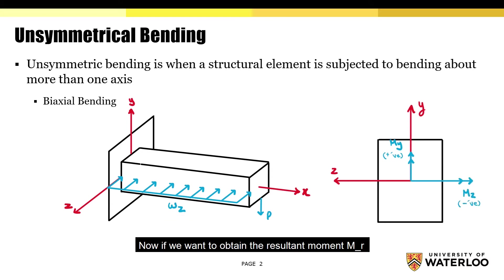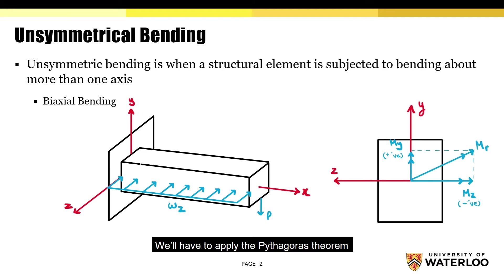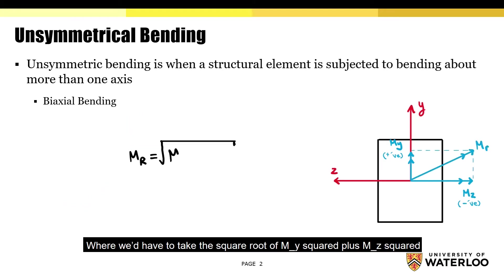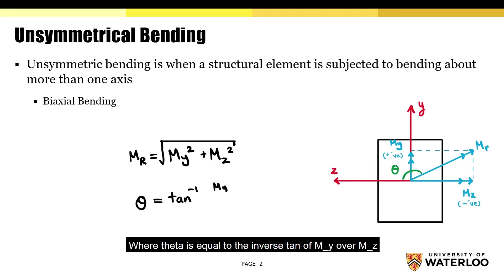Now if you want to obtain the resultant moment MR, we'll have to apply the Pythagorean theorem, where we'd have to take the square root of My squared plus Mz squared. And this resultant moment will be located at an angle theta from the positive z axis, where theta is equal to the inverse tan of My over Mz.